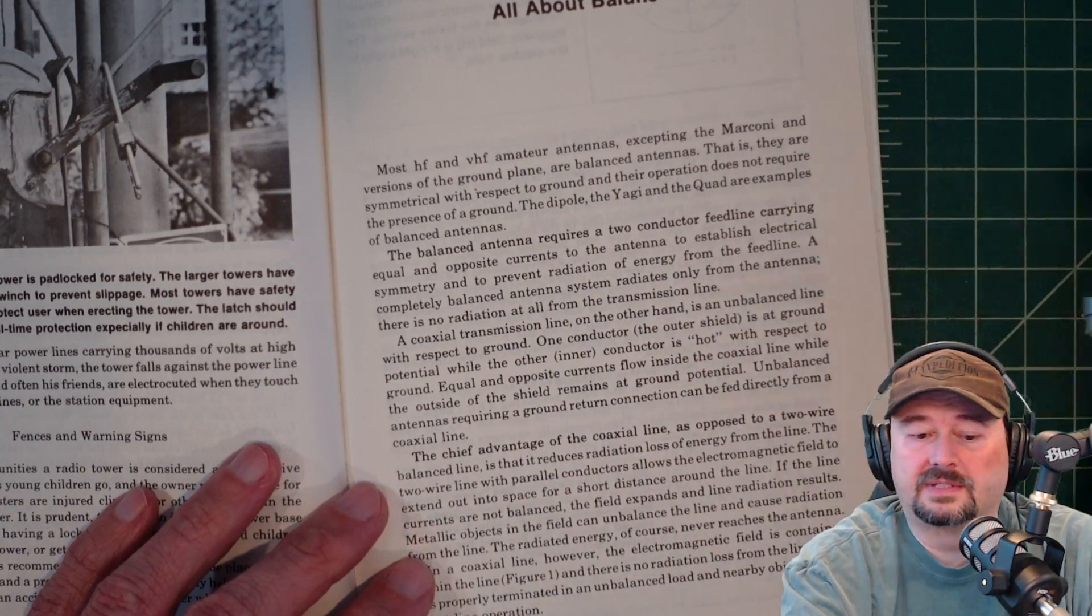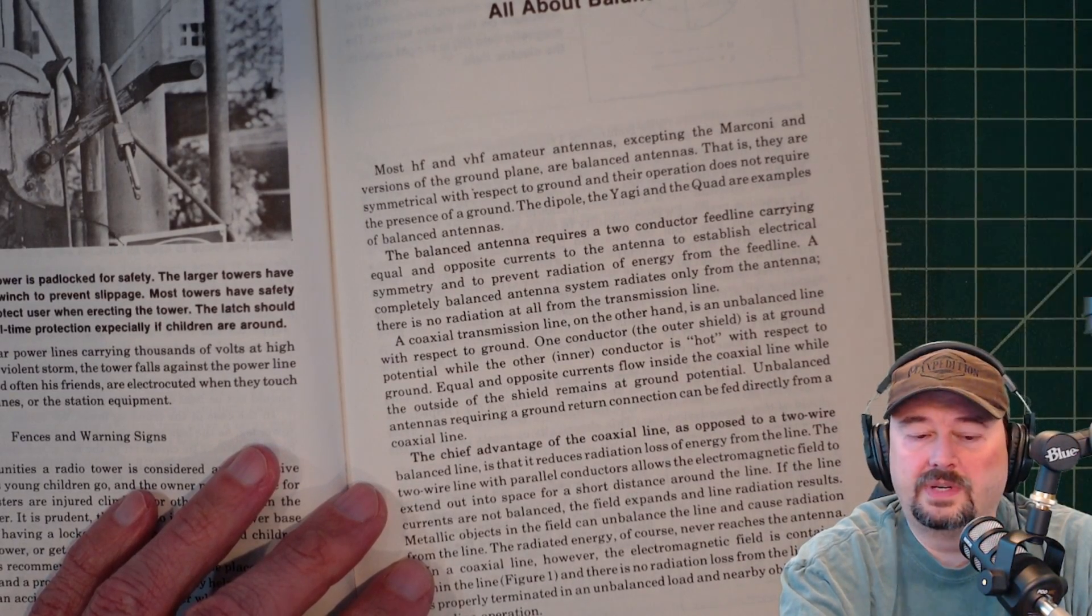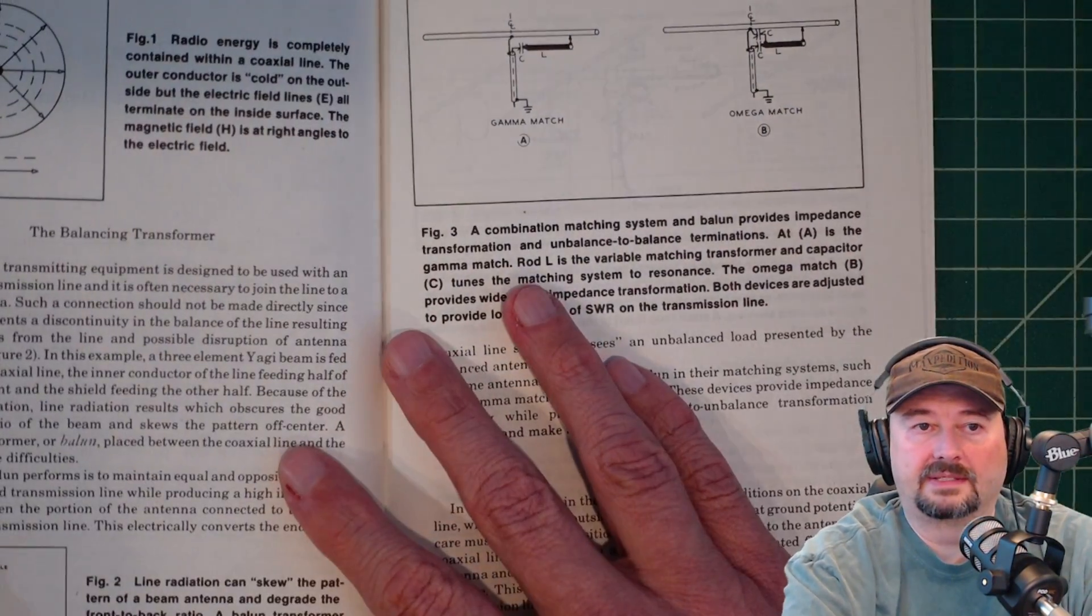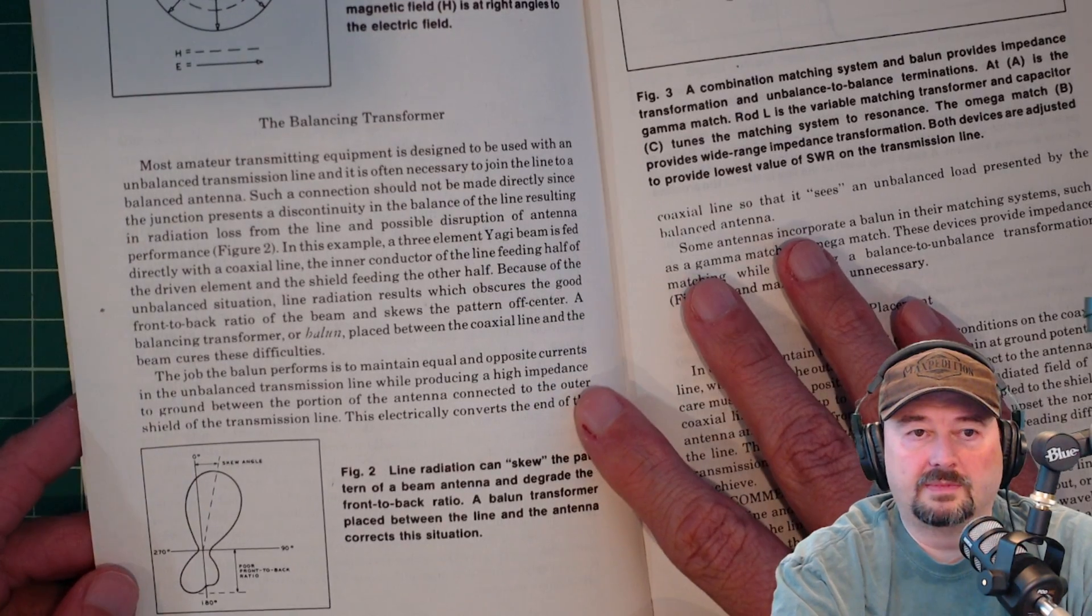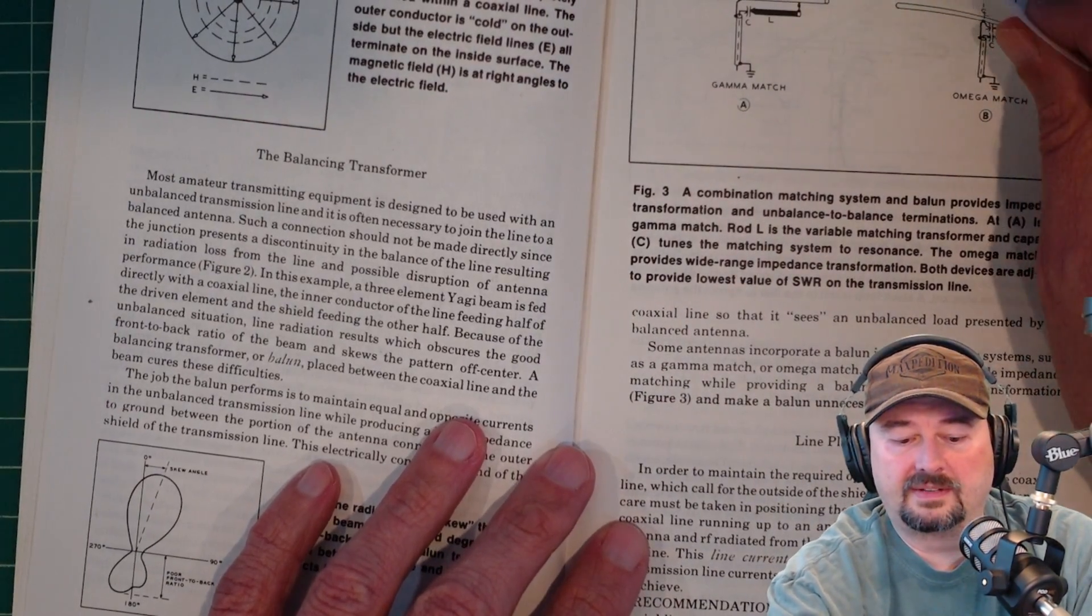And then he goes in and talks about coaxial cable, which is actually three conductors. And he talks a little bit about using balanced feed line like ladder line or window line and comparing that to coaxial cable, which is unbalanced. And he goes into more and more information about it. And there was something in here that I found quite controversial.